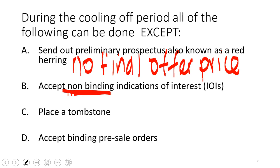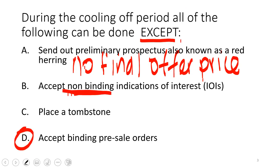I can send you a preliminary prospectus, also known as a red herring. It has pretty much everything you need to make a decision except the final offering price — that's a key testable distinction from the final prospectus. During the cooling off period I can accept non-binding indications of interest. The key word is 'binding' — accepting binding commitments is a big no-no. Many firms put their tombstones in Lucite as deal trophies. The correct answer here is that you can accept non-binding indications of interest.